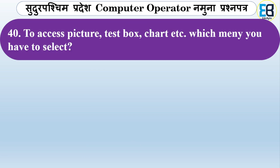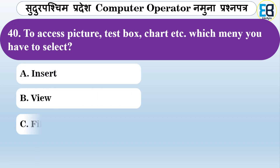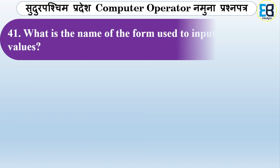To access picture, text box, art, chart, etc., which menu do you have to select? Options are Insert, New, File, or Edit. The correct answer is Insert — you use the Insert menu to access picture, text box, chart, and other objects.